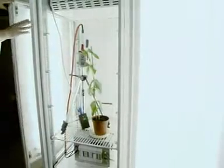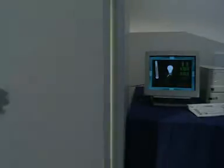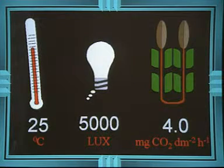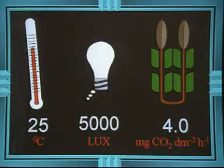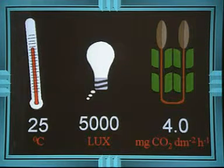Light intensity is controlled by switching on a different number of fluorescent tubes in the cabinet. Close the doors and the gas analyzer does the rest. The temperature in the cabinet is kept at 25 degrees Celsius. With four fluorescent tubes switched on, the light intensity is 5,000 lux and the CO2 uptake is 4 milligrams per hour.